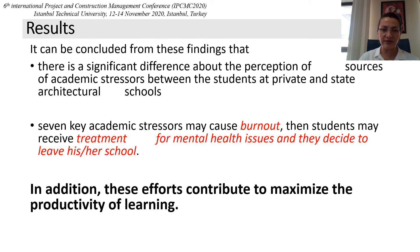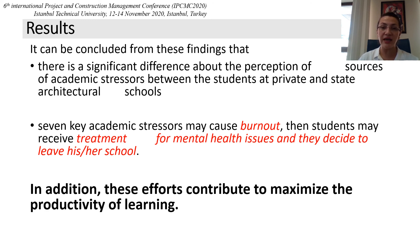The professional degree plan in architecture is filled with diverse and challenging topics, including history, technology, human factors, theory, urban planning, professional practice issues, and design. It can be concluded that there is a significant difference in the perception of sources of academic stressors between students at private and state architectural schools. The 7 key academic stressors may cause burnout; students may seek treatment for mental health issues or may decide to leave school. Therefore, having knowledge about sources of stress may help take precautions to minimize their effects and contribute to maximizing the productivity of learning.